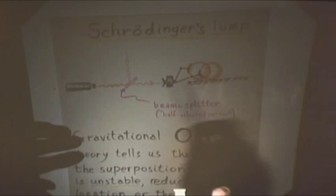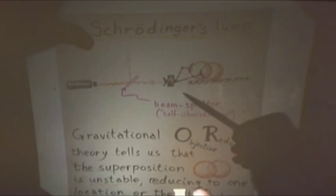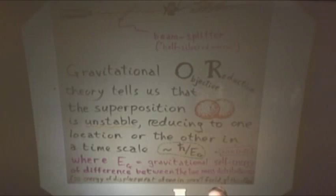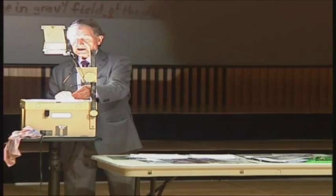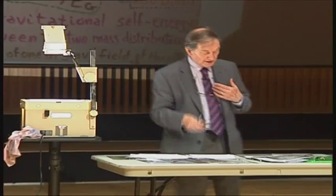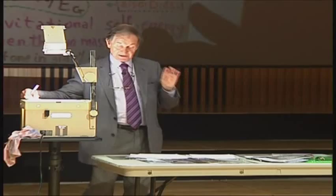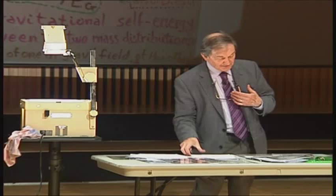If this lump is big enough, there is a criterion one can write down which depends on looking at the gravitational self-energy of the difference between the two mass configurations, from which you can calculate a lifetime. What I'm saying is that quantum mechanics, at a certain level, isn't quite right, and it's at that level where one or the other outcome takes place. The cat is either dead or alive, according to the improved quantum mechanics that we don't yet have.